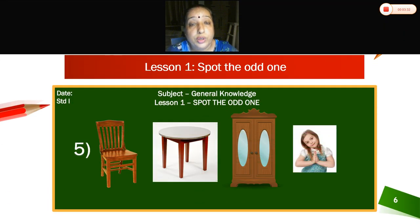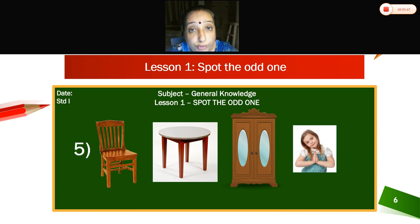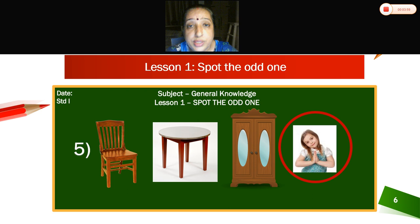Now what can you see here? Chair, table, cupboard, and a girl. Chair, table, and cupboard are furniture. But a girl is not furniture. So which will we ring? The odd one — that is girl.